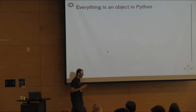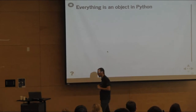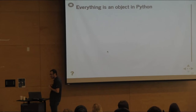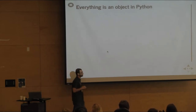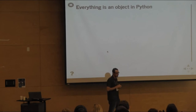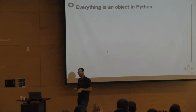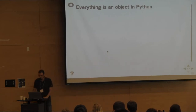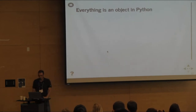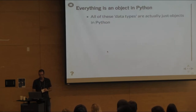Here's a little secret: in Python, there aren't really basic data types like in other languages. In Python, everything is an object — including the data types I just showed you. An object is a defined thing that has some state and some behavior.